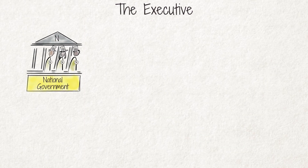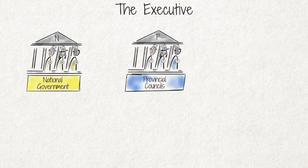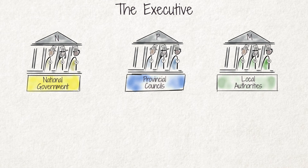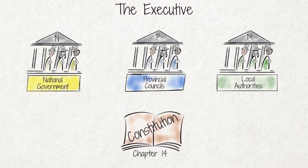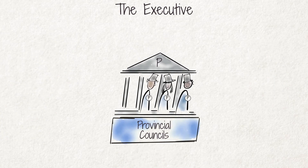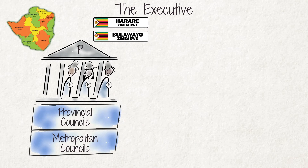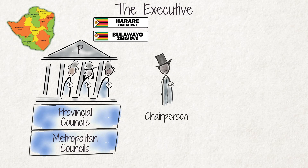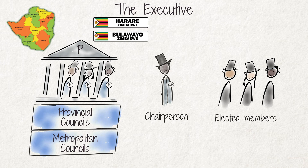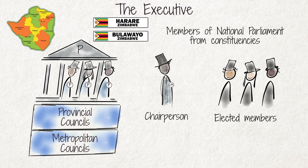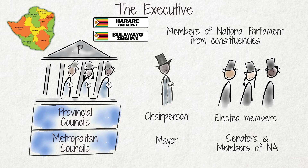While the national executive deals with issues concerning the whole country, there is also a provincial executive for each province and a local executive for each town or city, governed by Chapter 14 of the Constitution. The provincial executives are known as provincial councils and, in the case of Harare and Bulawayo, metropolitan councils. Each provincial council is headed by a chairperson and includes elected members as well as members of national parliament whose constituencies are in that province. The metropolitan councils are headed by the mayor of Harare and Bulawayo and include the senators and members of the National Assembly elected for these cities.